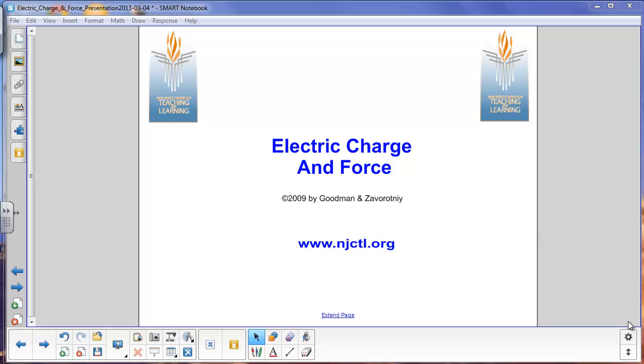The second major branch of classical physics is electricity and magnetism, and that's what we'll be starting with this chapter on electric charge and force. The major principles of electricity and magnetism were summarized in 1861 with James Clerk Maxwell's equations.